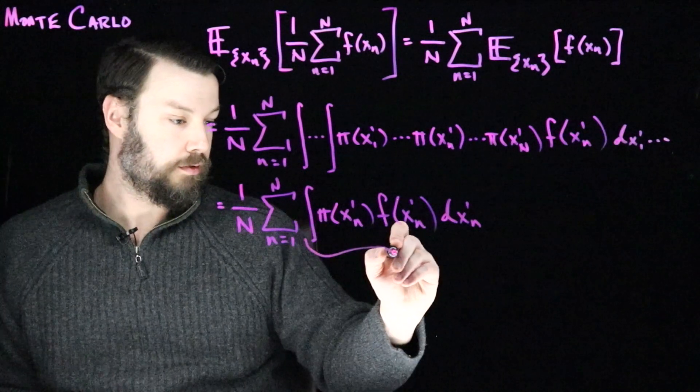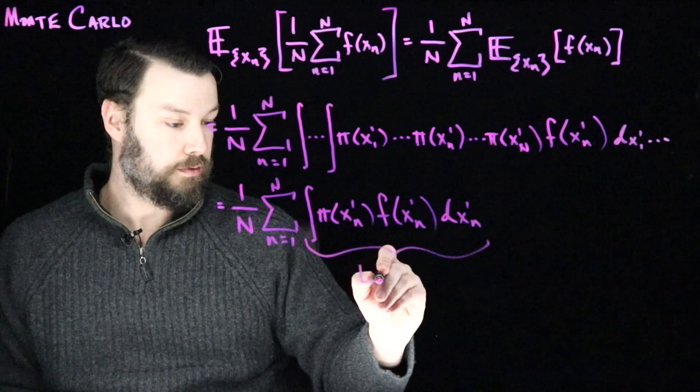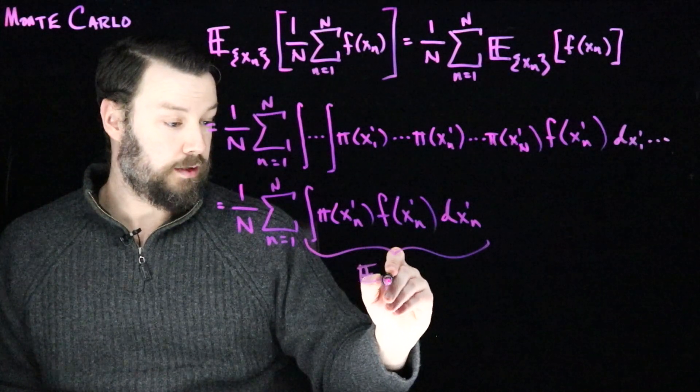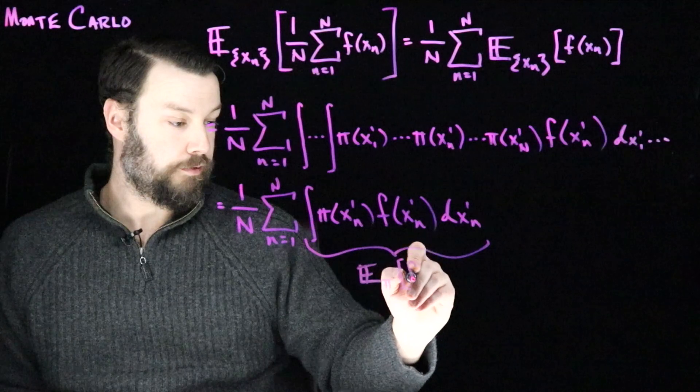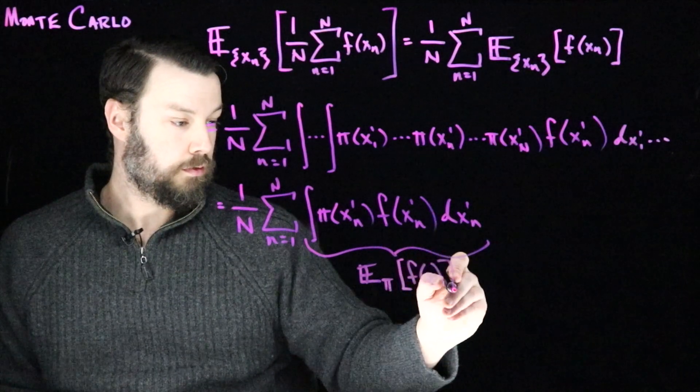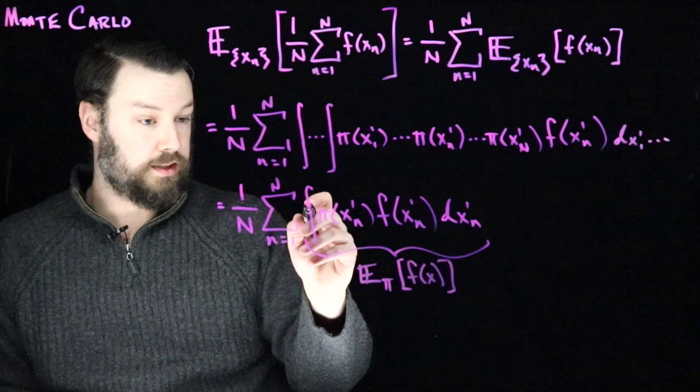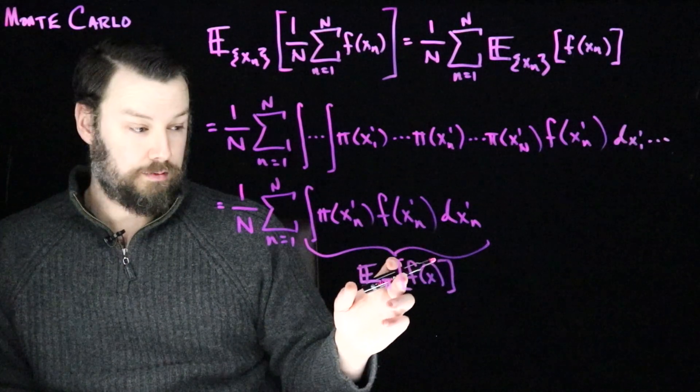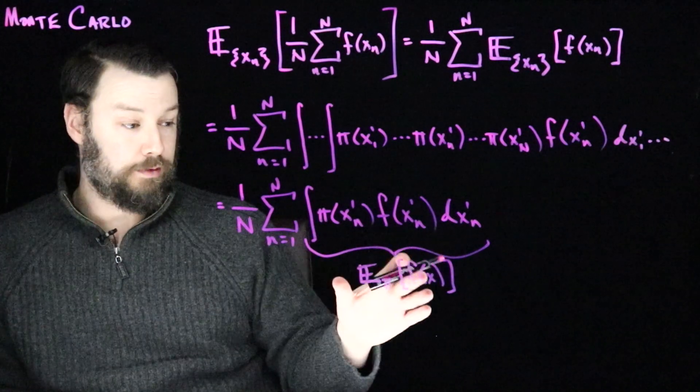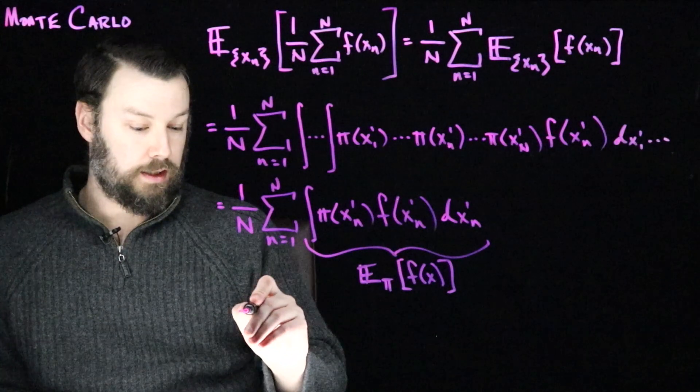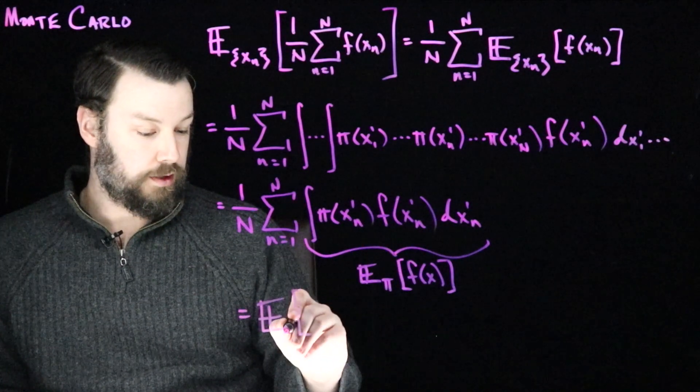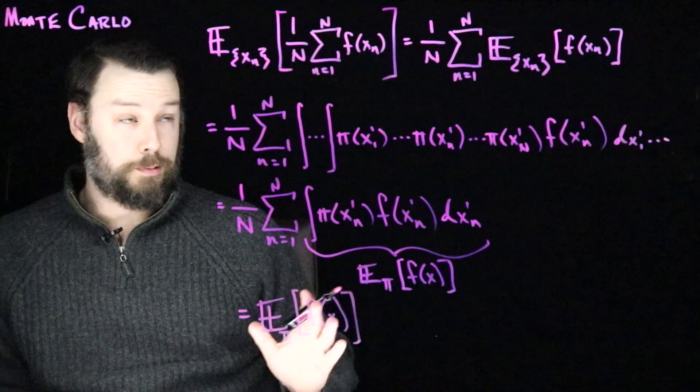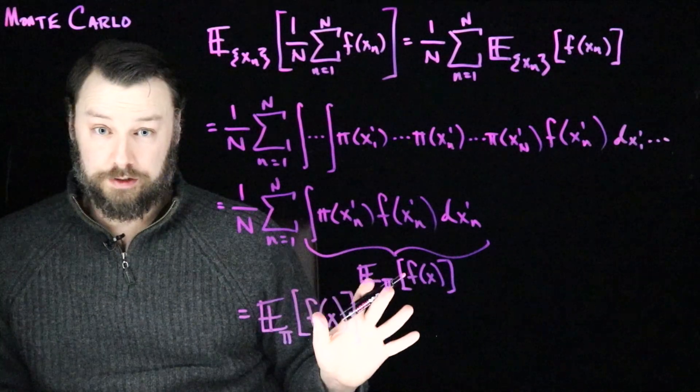Now notice that this is exactly the quantity that we're trying to compute. This is the expectation under pi of f of x. And when I take a sum over n of them, I get n copies of that constant. It doesn't depend on n. And then I divide by big N, and I get the thing I'm interested in. Now this isn't too surprising, it's just sort of saying the averages of averages have the same expectation.